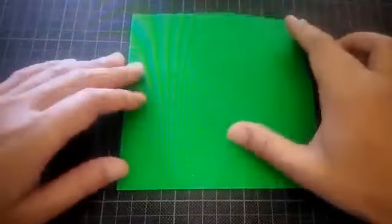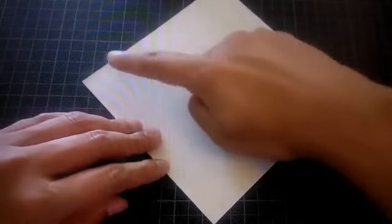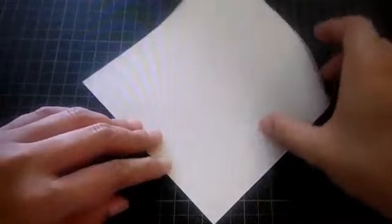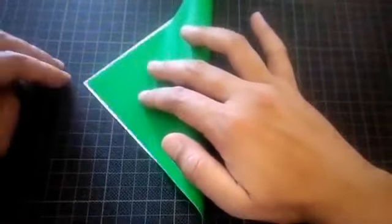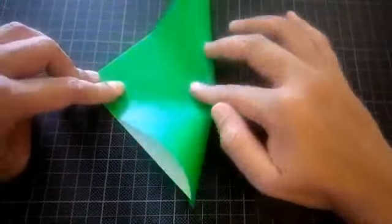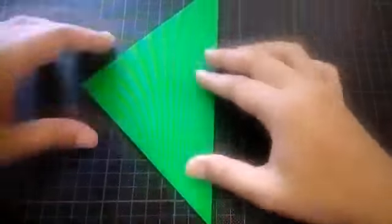Fold it half corner to corner as I am showing. Crease it properly. Now it will become triangle.